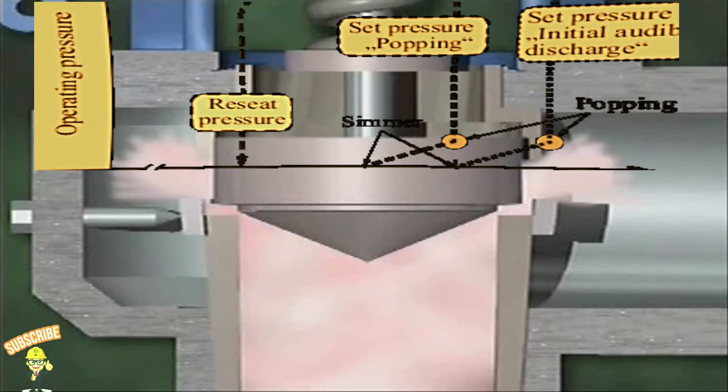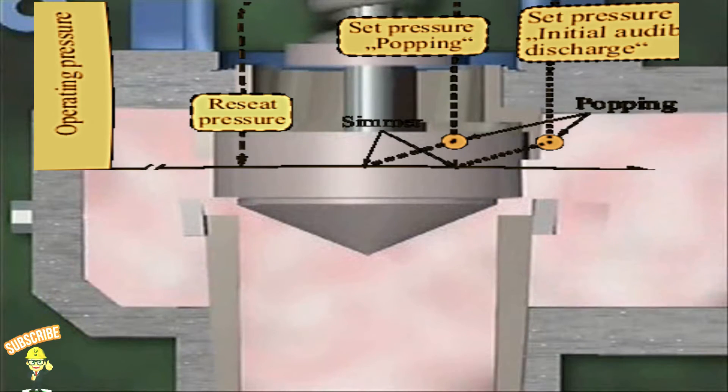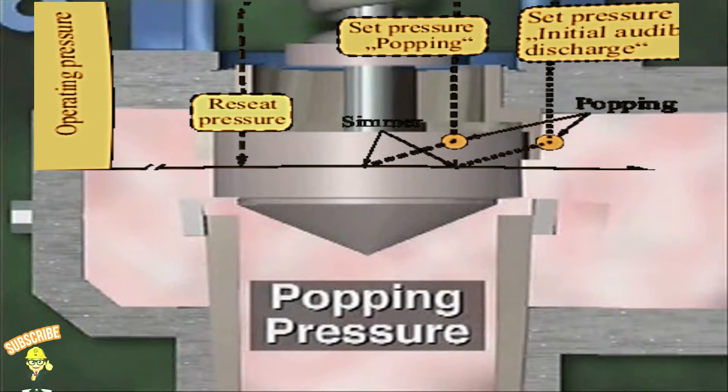As the disc lifts, the lip of the disc is suddenly exposed to system pressure. Since a larger area of the disc is now exposed to the pressure in the system, more force is being exerted on the bottom of the disc. This increased force overcomes the spring tension and causes the disc to pop open to about a 60% open position. When the valve's popping pressure is reached, the valve should open with a clean and sudden pop.